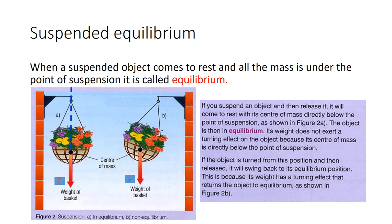Let's talk about suspended equilibrium. When an object comes to rest, we talk about it being in a position of equilibrium. An example is a hanging basket - when it has been moved by the wind, once the force of the wind stops, it will move back to a point of suspended equilibrium. That suspended equilibrium is determined by the centre of mass of the hanging basket. The depth, width, and contents of the basket all impact where the centre of mass lies within it.